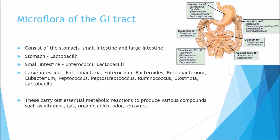The microflora of the GI tract consists of the stomach, the small intestines, and the large intestines. In the stomach we get Lactobacilli mainly. In the small intestines we get Enterococci and Lactobacilli. In the large intestines there is a large amount of bacteria: Enterobacteria, Enterococci, Bacteroids, Bifidobacterium, Eubacterium, Peptococcus, Peptostreptococcus, Ruminococcus, Clostridia, and Lactobacilli. These carry out essential metabolic reactions — they can synthesise certain vitamins, produce gas and odour, and also produce useful organic acids and enzymes.